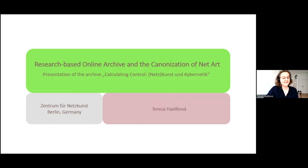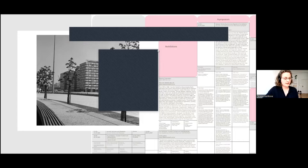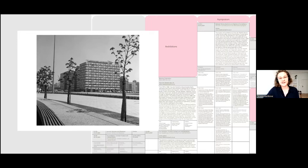Through our activities, we research the possibilities of contextualization of net art and digital art. Today I would like to show our small online archive that we created last year for our project Calculating Control: Net Art and Cybernet Text. Since 2019, our group has been a pioneer user in the House of Statistics in Berlin, an urban project trying to rejuvenate an old abundant building in the center of the city.